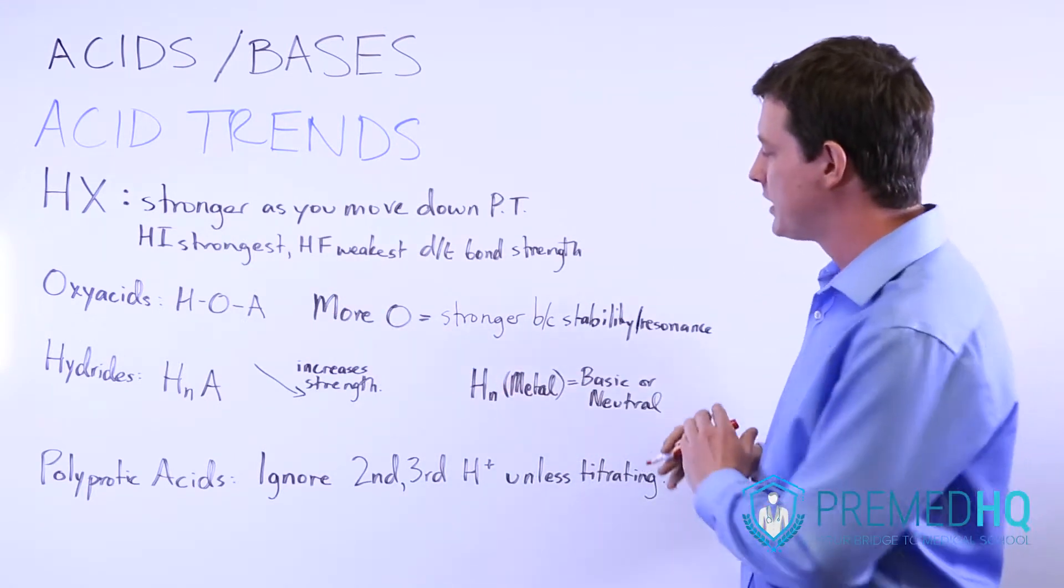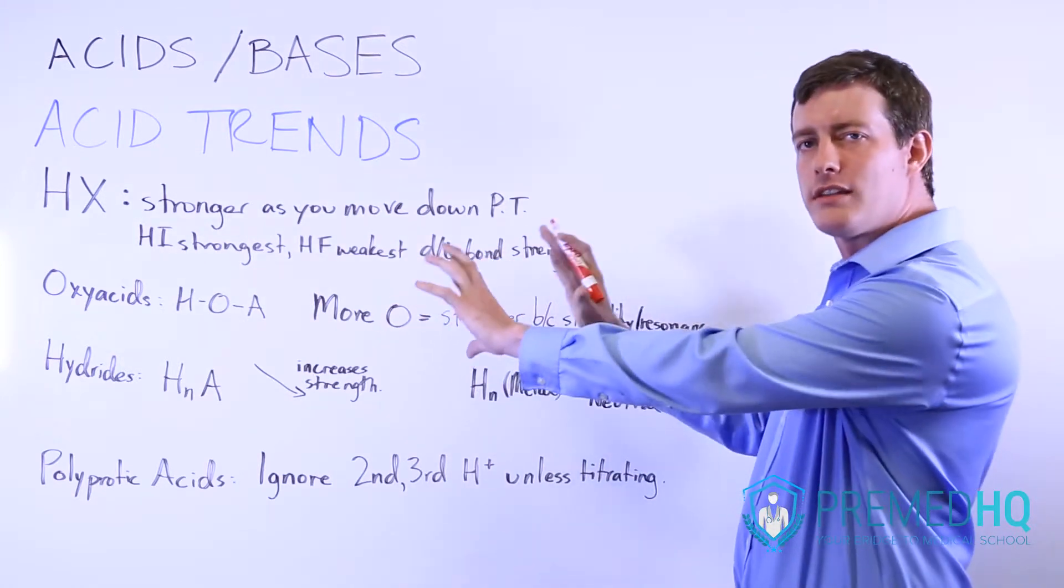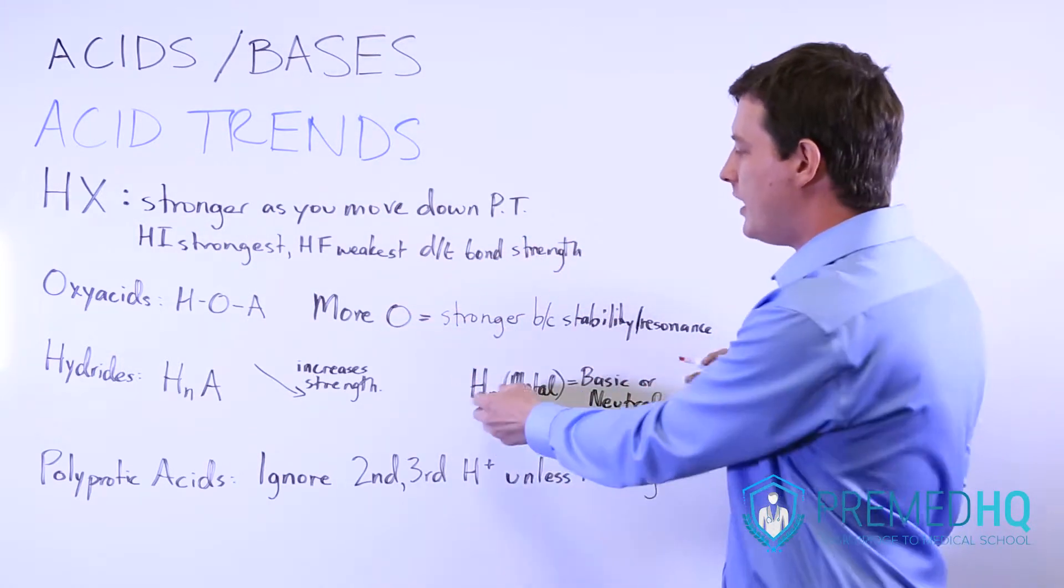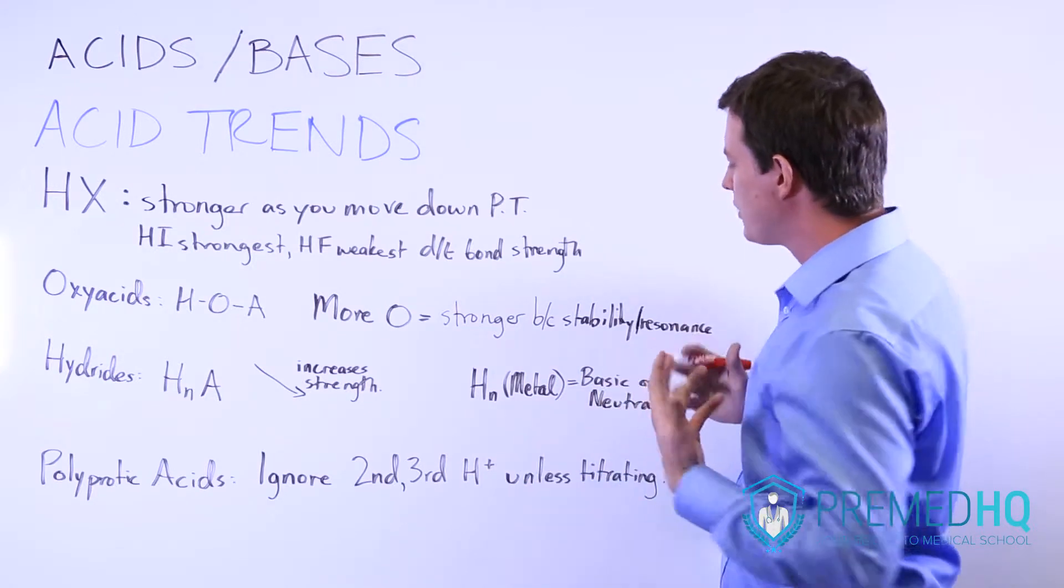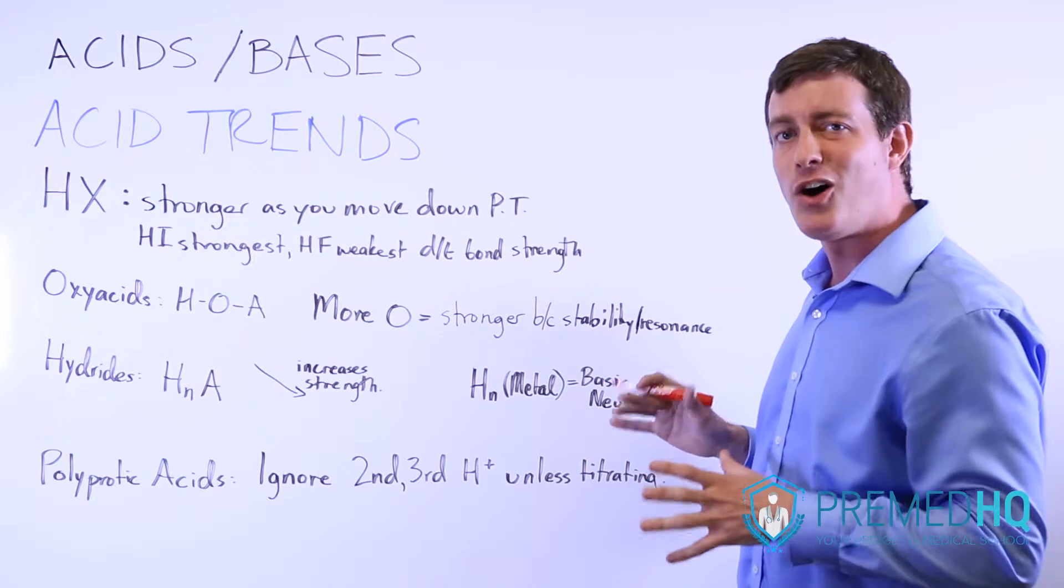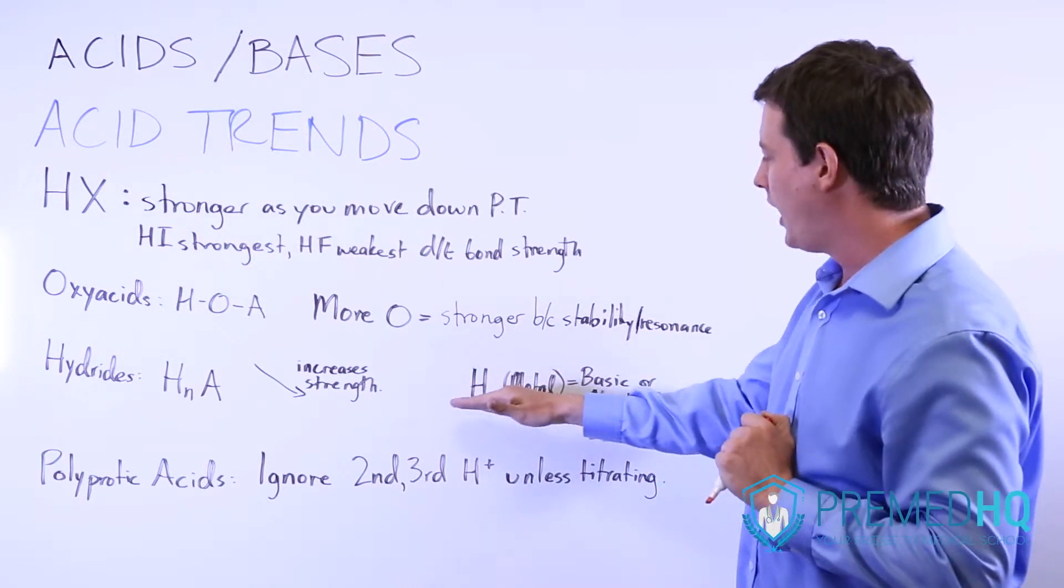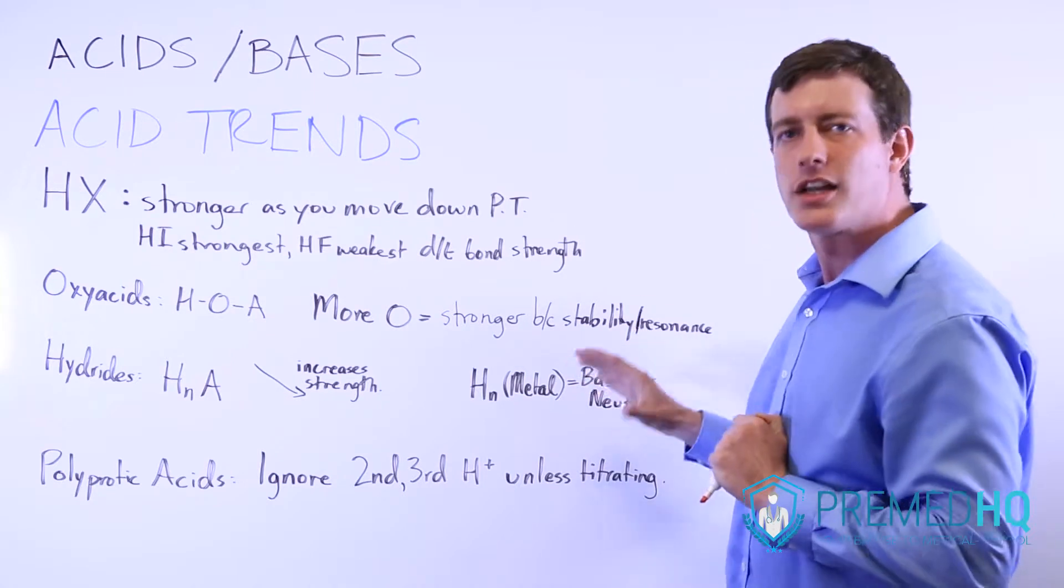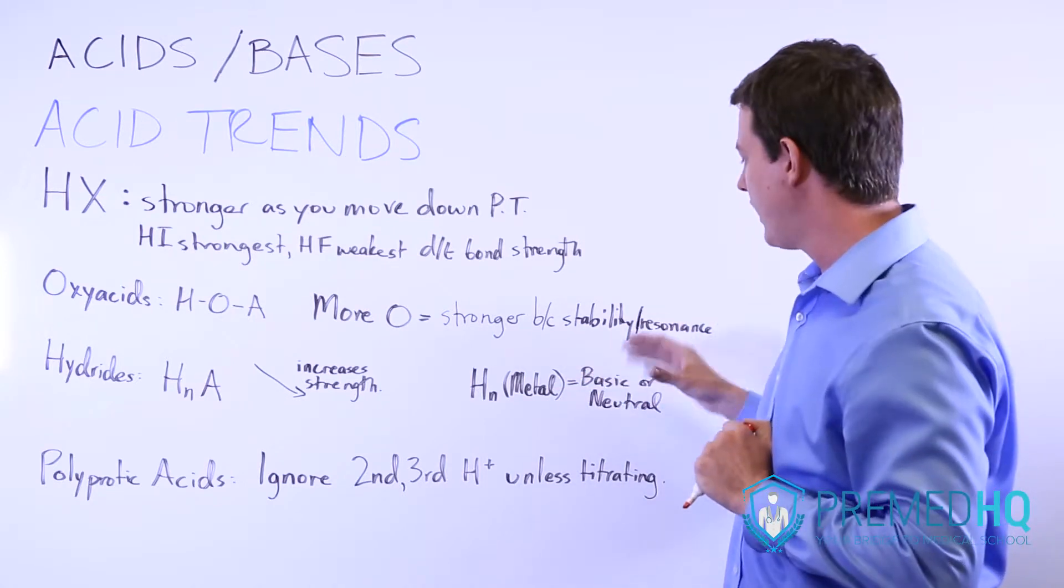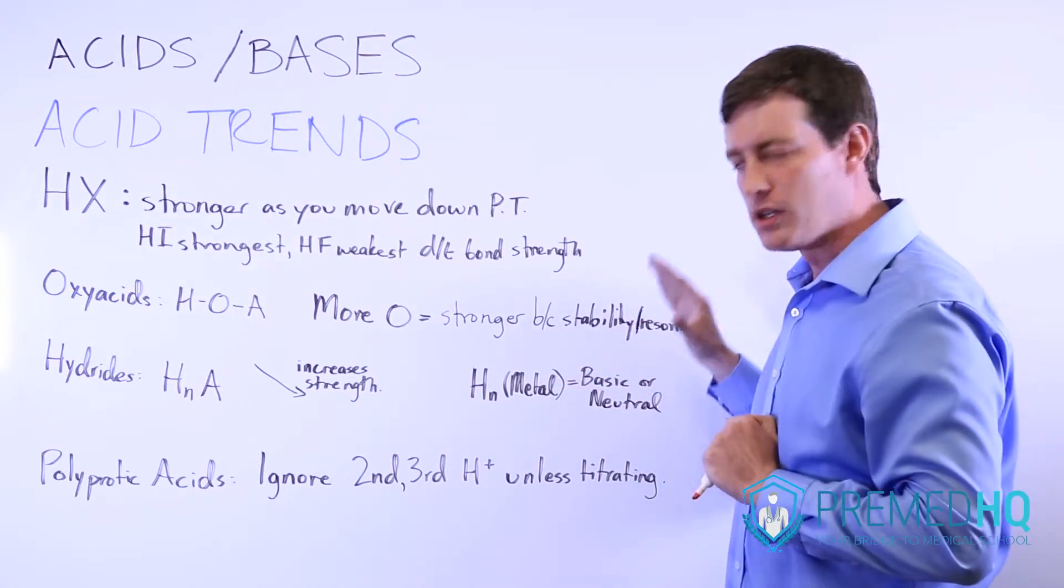Another thing to realize is that because the metals are on the left of the periodic table, hydrogen bound with just a metal will be either basic or neutral. It's not very acidic at all. So anytime you see hydrogen directly bound to some metal, it's not going to be very acidic, but will instead have basic or neutral properties.